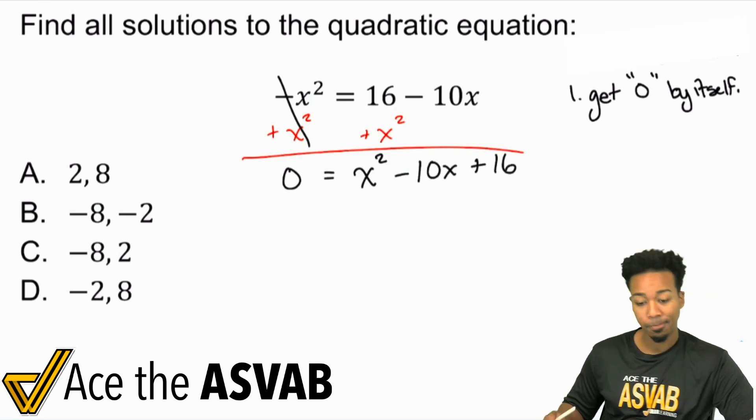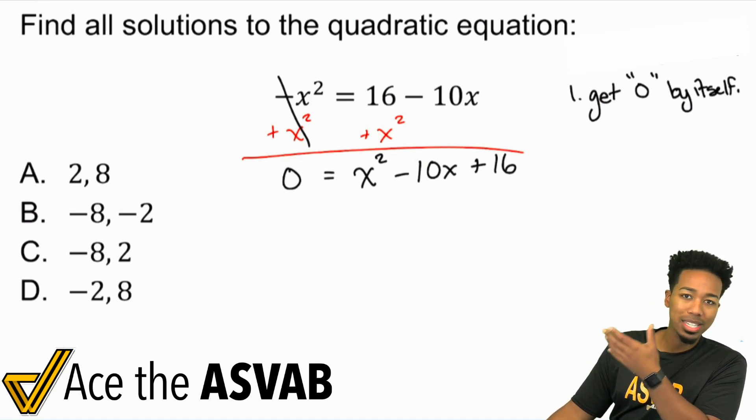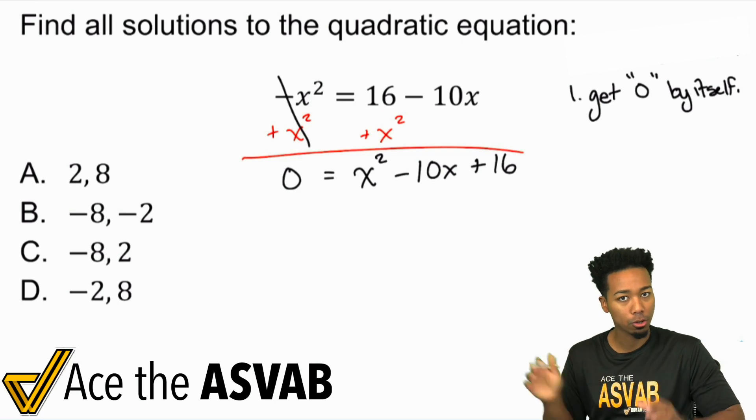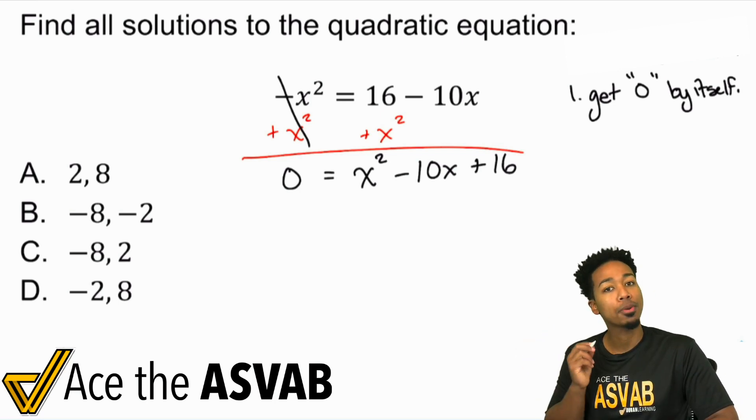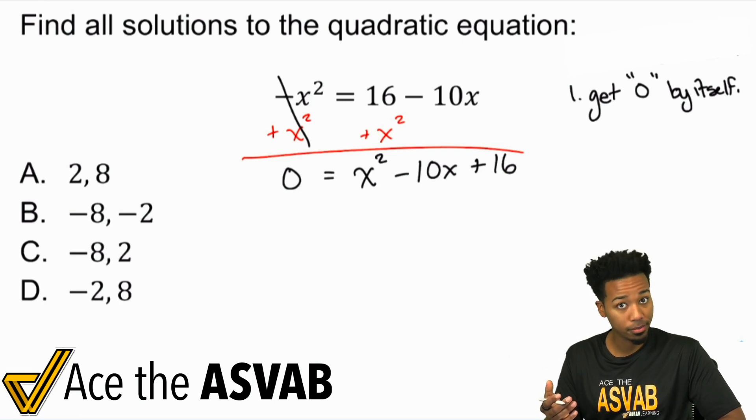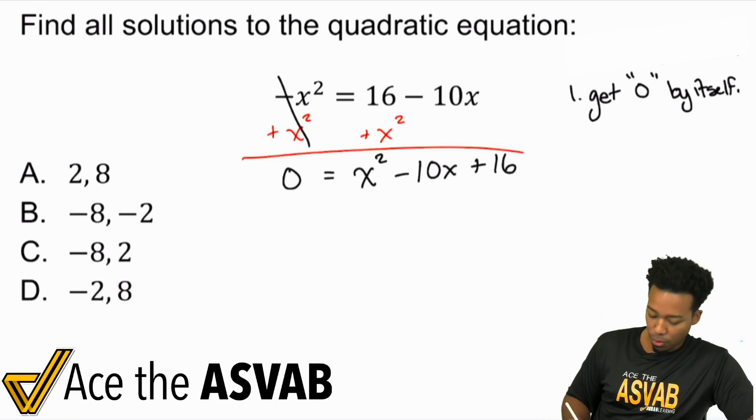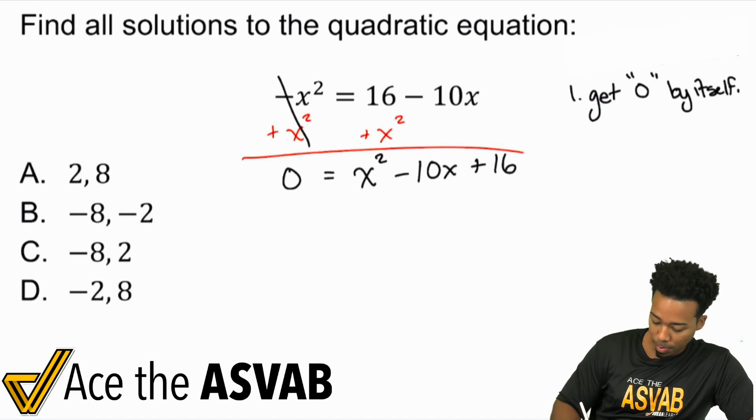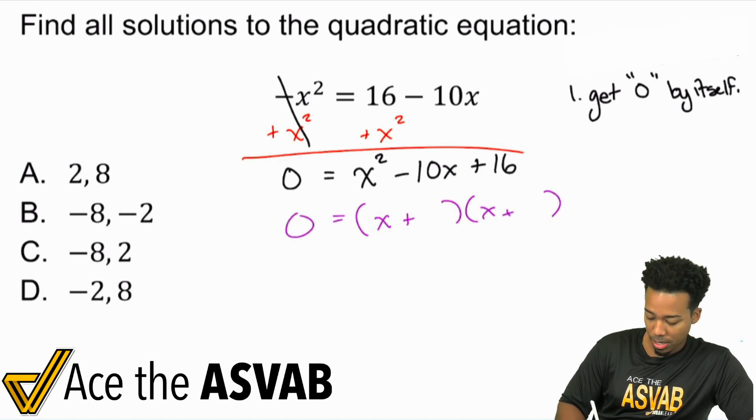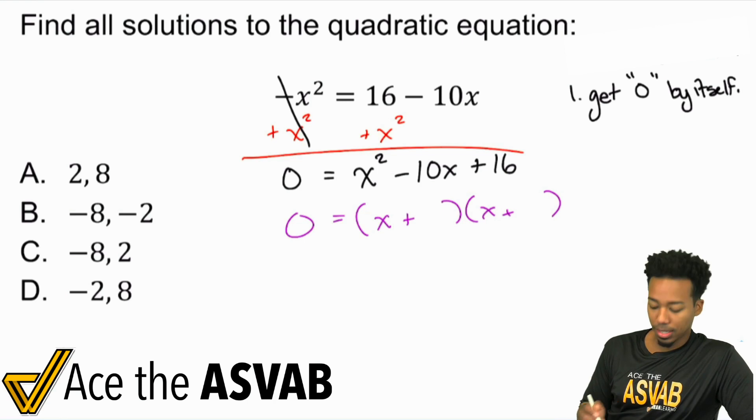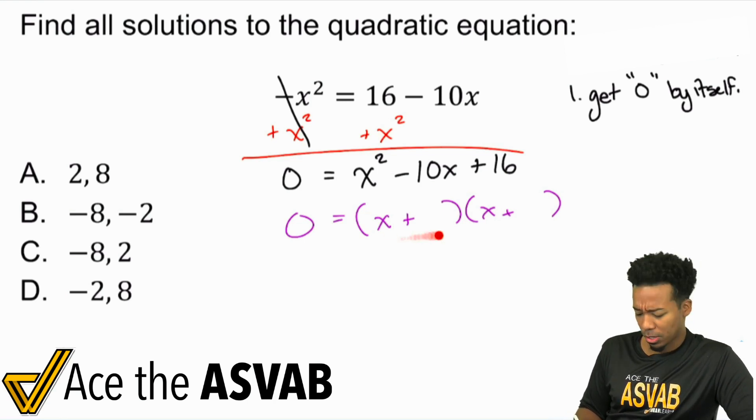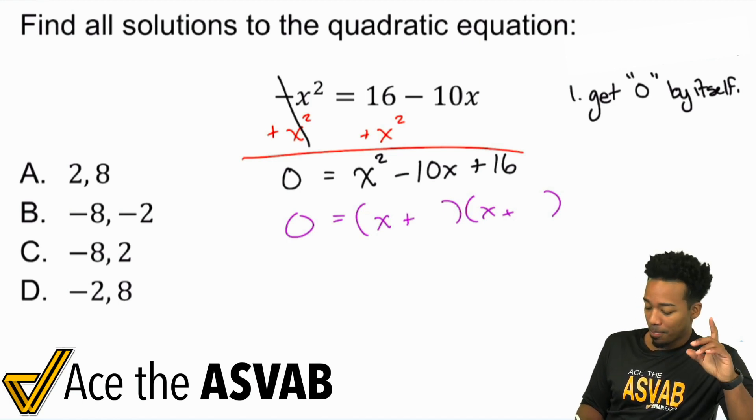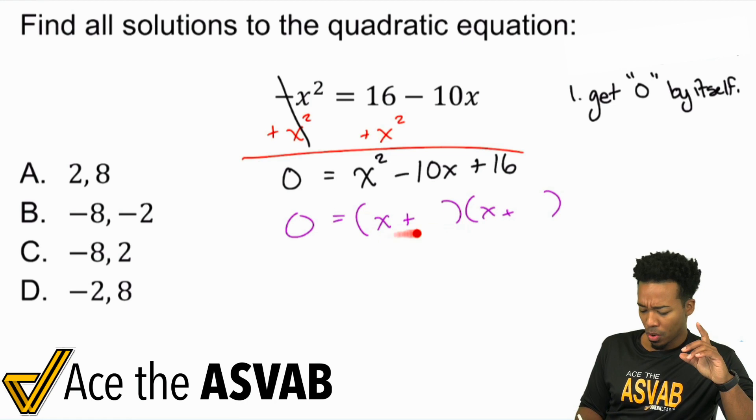So now that we're here, here's what needs to happen. We need to go ahead and factor this polynomial here. We're going to factor it because once we factor it, we'll be able to actually solve. Here's why: the factored form of a polynomial typically looks like x plus something times x plus something whatever, and that's going to equal zero. What's happening between these two parentheses? Multiplication, right?